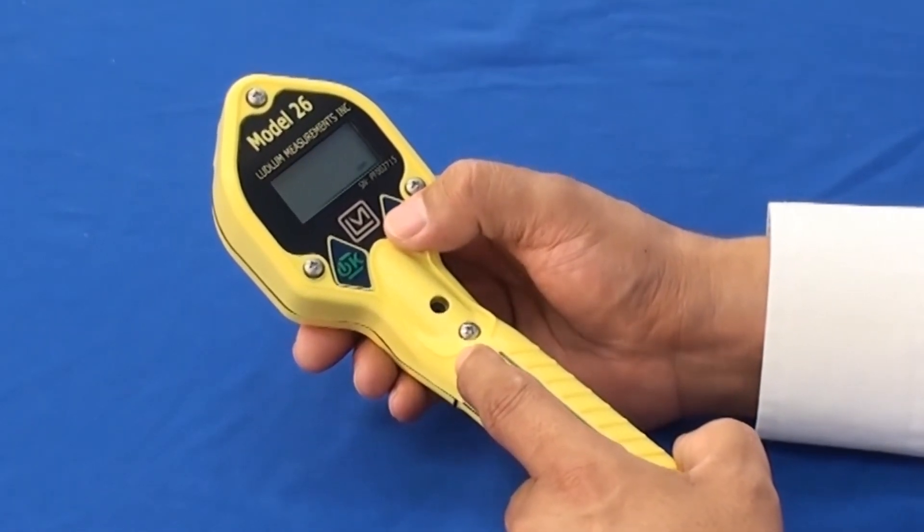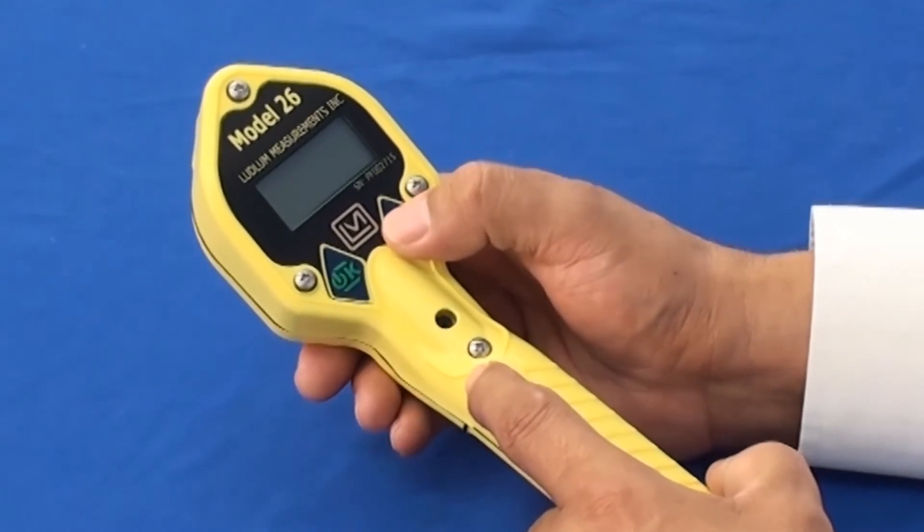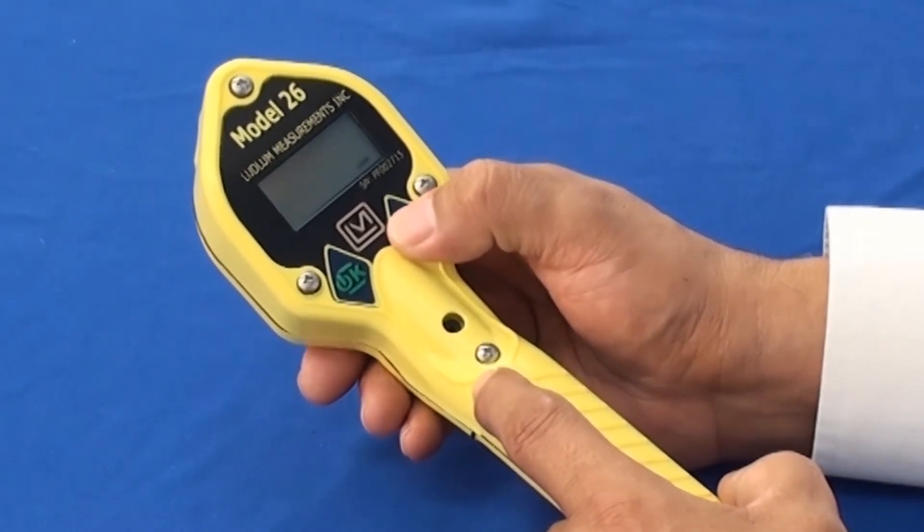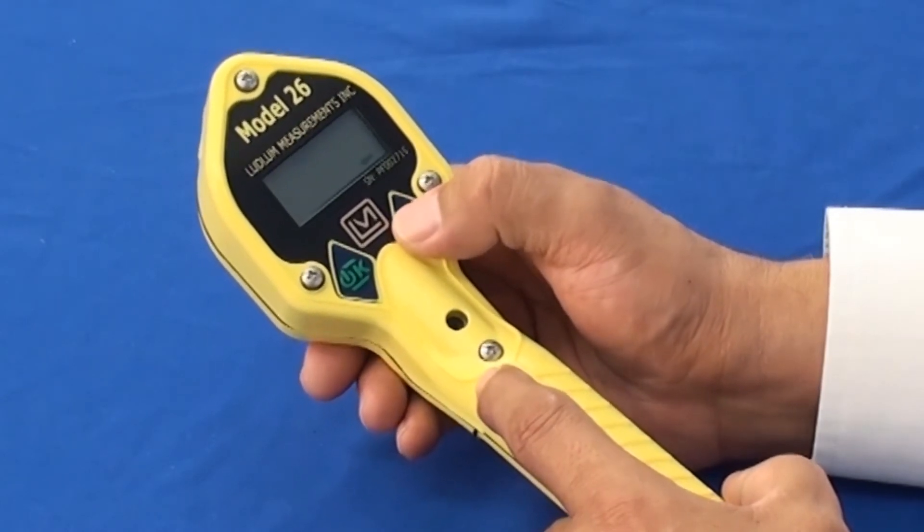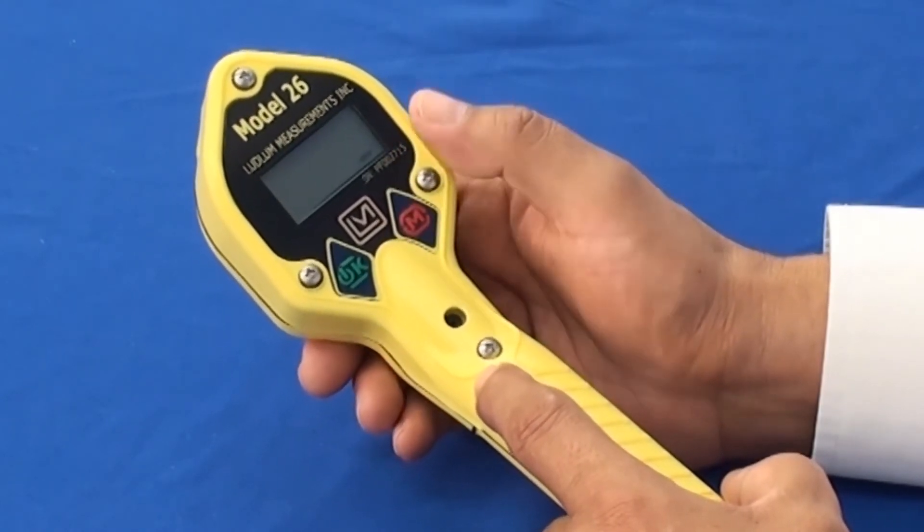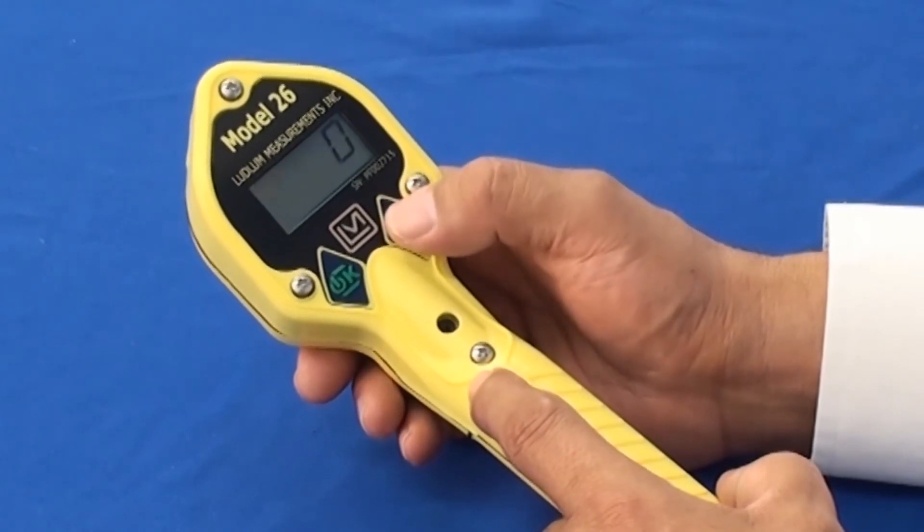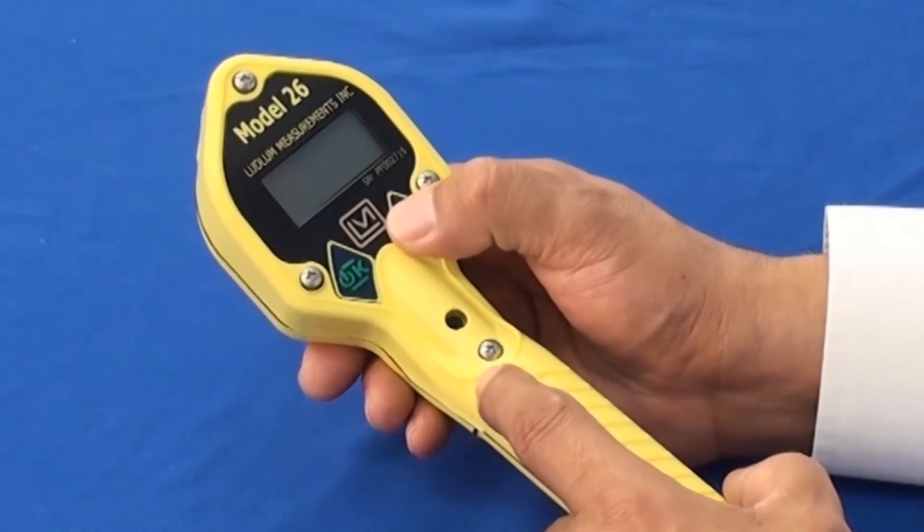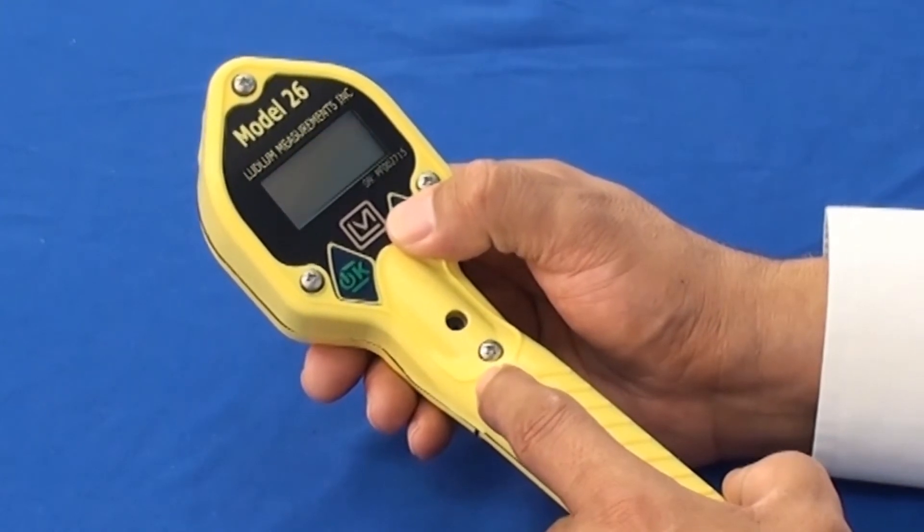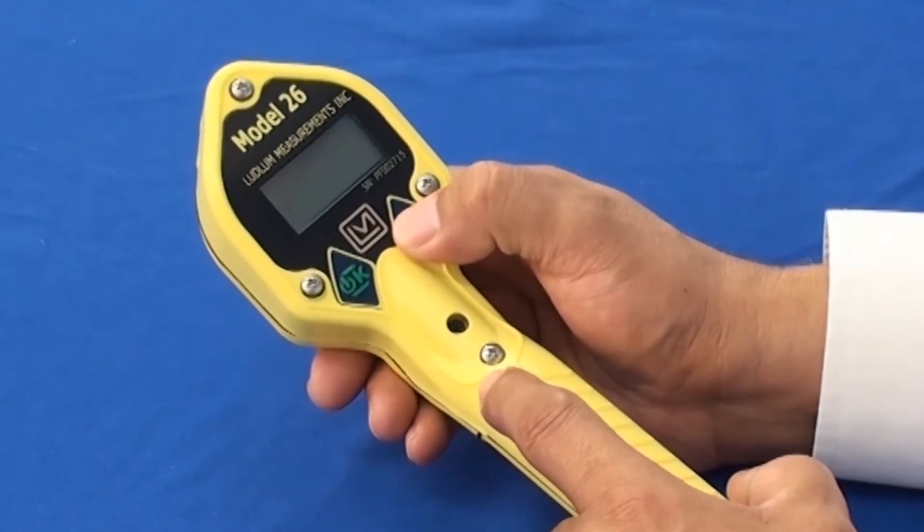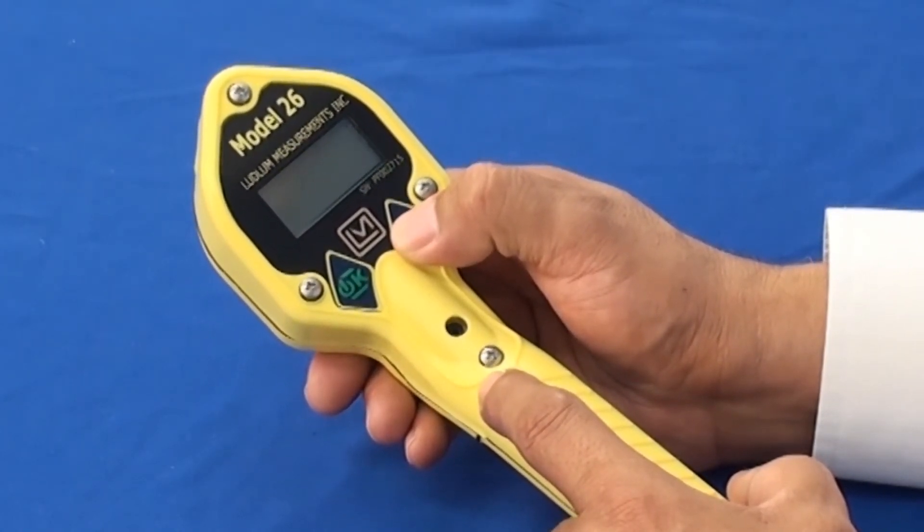In the setup mode, beginning with the type of count rate, whether it be counts per second or counts per minute, you would select one of the two. And then following into the second display, which is your response time, you would use the Acknowledge button to change the value from zero to nine.